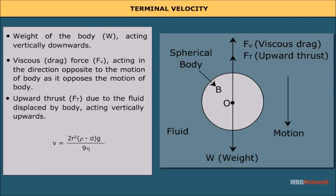A stage is reached when the weight of the body, or downward force, is just equal to the sum of the two upward forces — the viscous drag force and the upward thrust. Then the body no longer speeds up but starts falling with constant terminal velocity v, given by v equals 2r squared times (rho minus sigma) times g divided by 9 eta. This shows terminal velocity is directly proportional to the square of the radius; a bigger body attains a larger terminal velocity. If rho is less than sigma, terminal velocity is negative, meaning the body moves upward — this explains why gas bubbles rise through a soda water bottle. Terminal velocity is also inversely proportional to the coefficient of viscosity; a more viscous fluid results in a smaller terminal velocity.